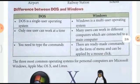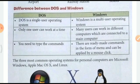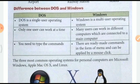Now, the difference between DOS and Windows: DOS is a single-user operating system, while Windows is a multi-user operating system. In DOS, only one user can work at a time; in Windows, many users can work. In DOS you need to type commands, whereas in Windows there are ready-made commands in the form of menus that can be applied by a mouse click — you need a mouse for Windows.